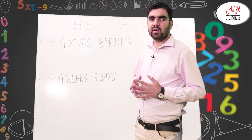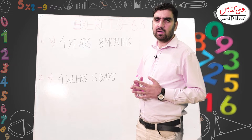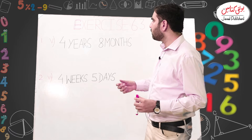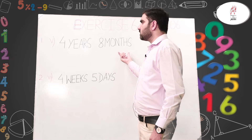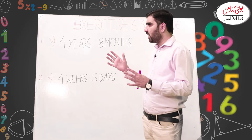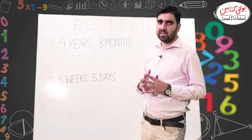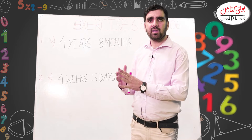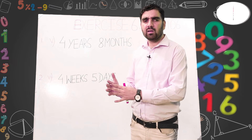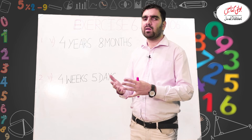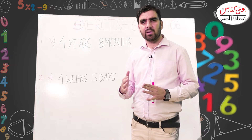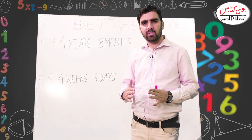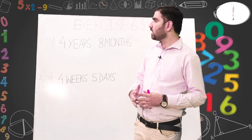In question number one we are going to learn how to convert years into months. Before we start, let's do a little rehearsal. If we have 2 years and want to convert to months, we multiply by 12 — so 2×12 = 24 months. For 3 years: 3×12 = 36 months. Now let's start the question.